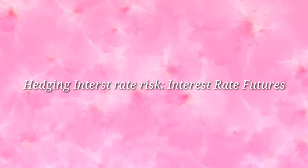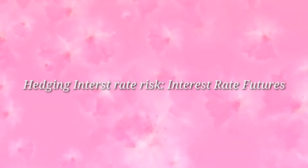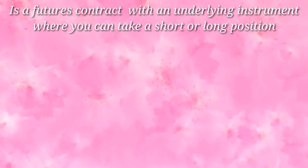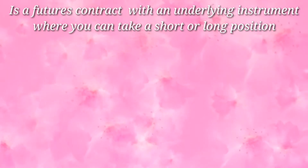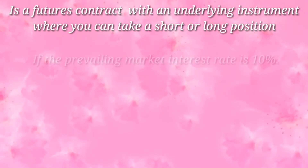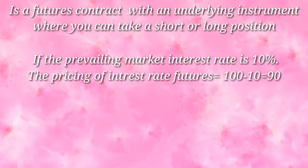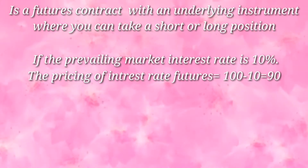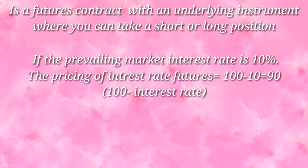In the previous video we discussed FRA, one of the simplest methods for hedging interest rate risk. Today we cover interest rate futures — instruments which can be bought and sold, where you can take short and long positions. If the prevailing market interest rate is 10%, then the pricing of an interest rate future will be 100 minus 10, that is 90 — it is always 100 minus the interest rate.